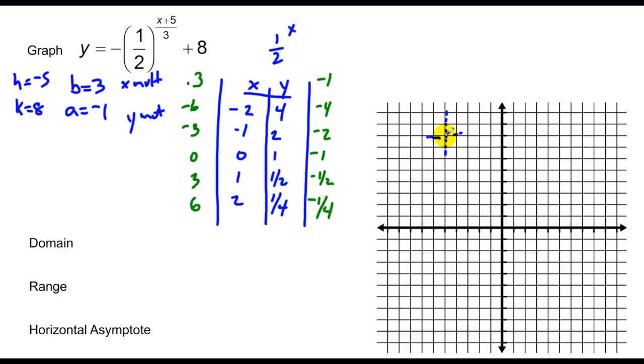I'll do all that from this point right here. So I go back 6, down 4: 2, 3, 4, 5, 6, down 1, 2, 3, 4. I'll go back 3, down 2: 1, 2, 3, 1, 2. So I have negative 2, 0, negative 1, over 3, down 1/2, and over 6, down 1/4.